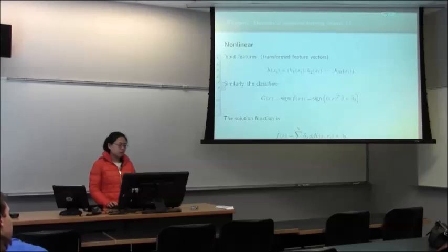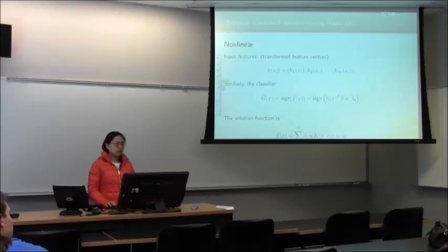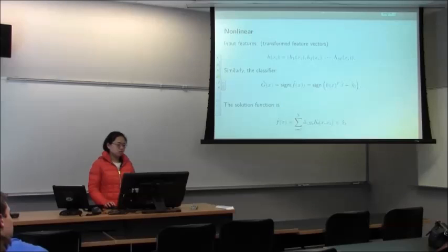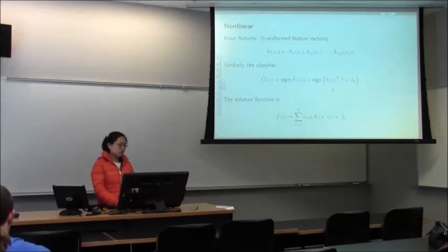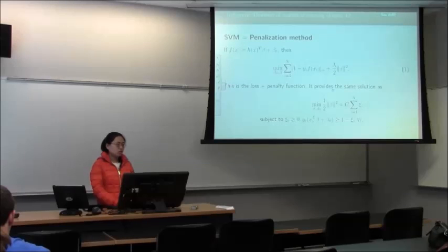The classification function boundary will be f-hat equal to h(x)^T beta-hat plus beta-0. In the past it was x^T beta-hat plus beta-0-hat. The solution is very similar except x-i is replaced by K(x, x-i), which is related to h(x). This shows that the support vector machine is equal to a penalization method.